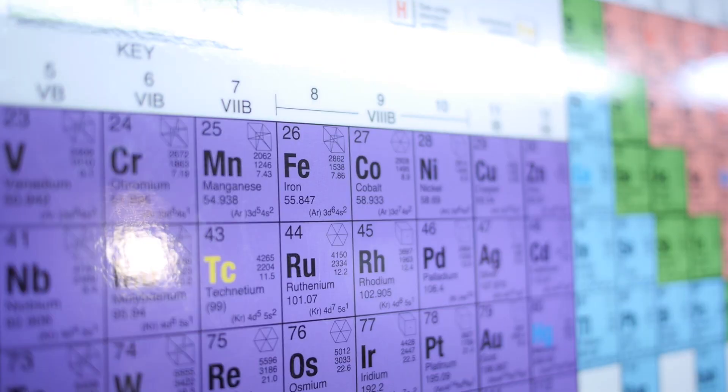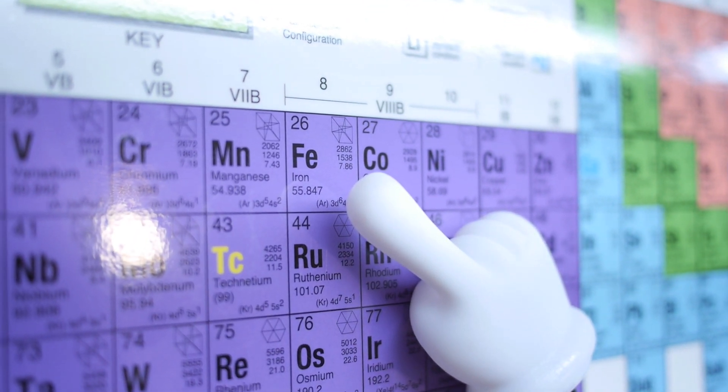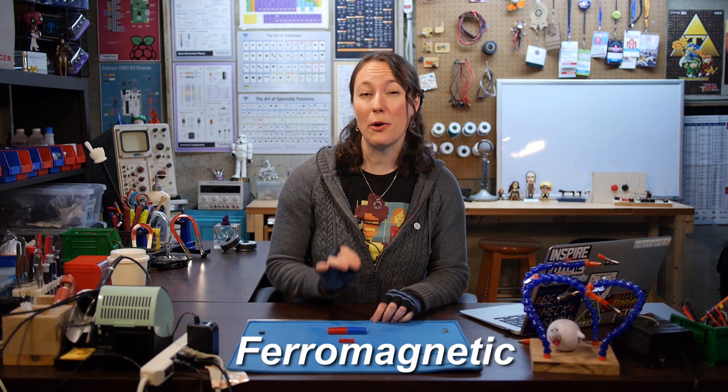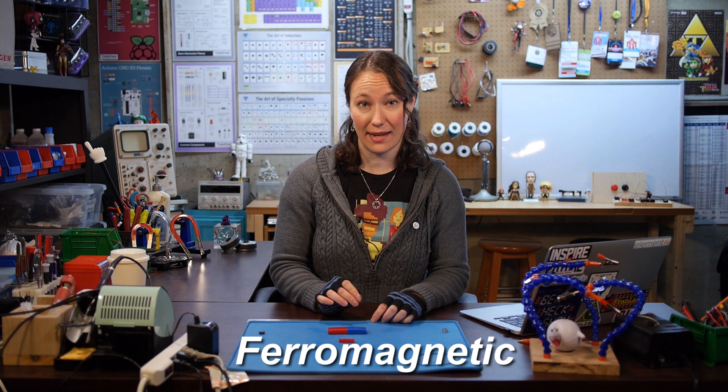Some materials respond to the presence of a magnetic force while others do not. You may have heard of ferrous metals. Bueller. Bueller. Not that kind of ferrous. Ferrous as in Fe. Ferrous metals are those that contain iron. Iron is a ferromagnetic substance, meaning it has an extremely high relative permeability rating.